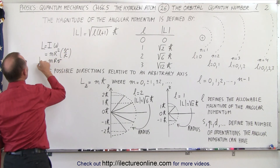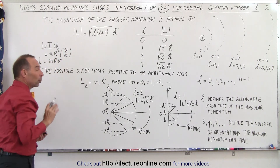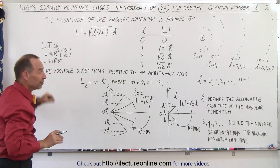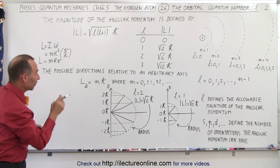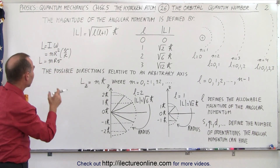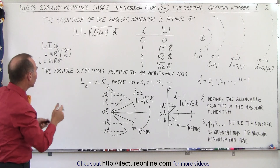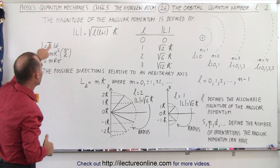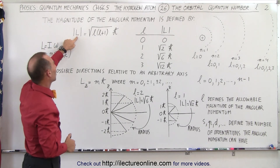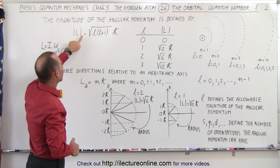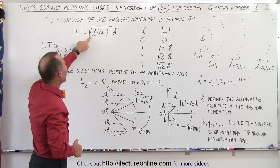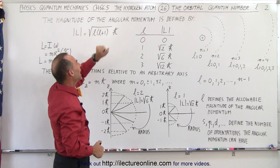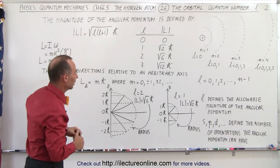That of course equals mr times v. But in quantum mechanics, r and v for the orbit of an electron are quantized, so therefore the angular momentum is quantized. The magnitude of the angular momentum is defined as the square root of L times L plus 1, times H-bar.